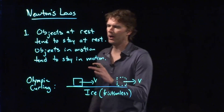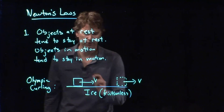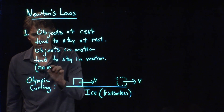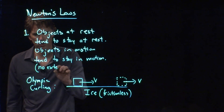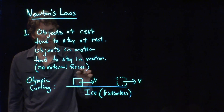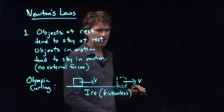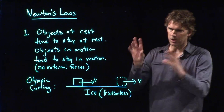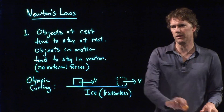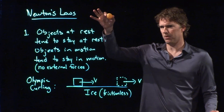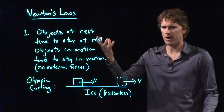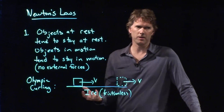And so really what we should add is this little caveat: no external forces. There's nothing trying to slow it down, nothing trying to speed it up. Obviously, in the example of the ping pong ball dropping, we do have an external force — gravity is trying to pull it down.